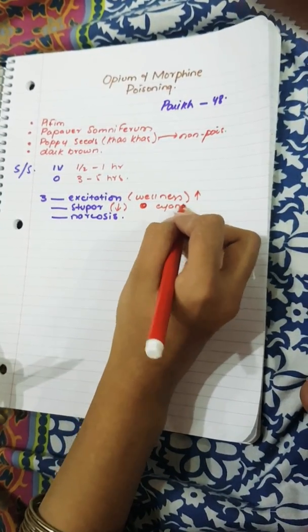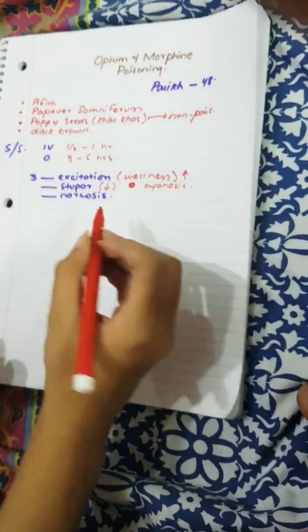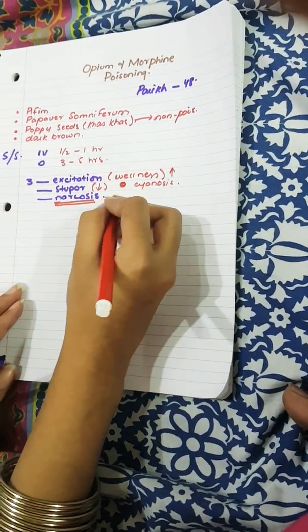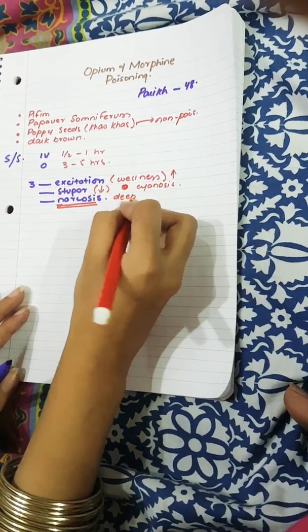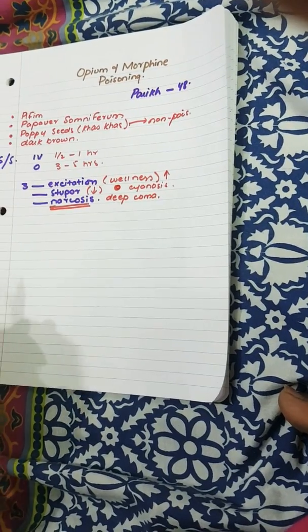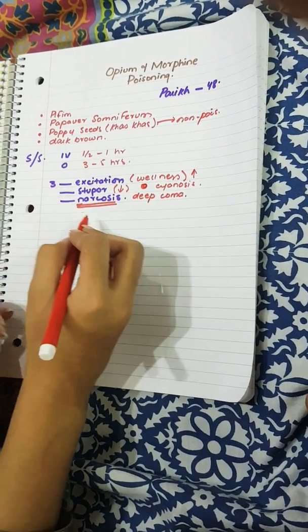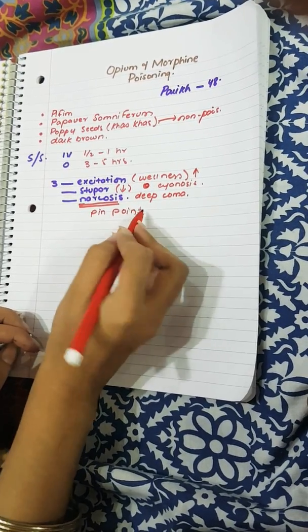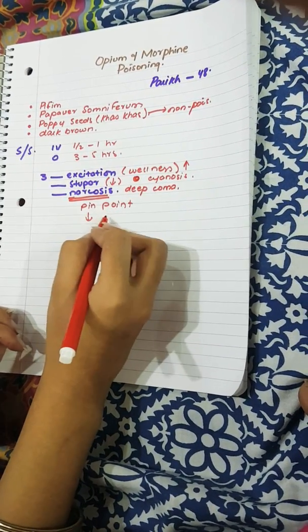Then comes the stage of narcosis. Narcosis here means that the patient is in deep coma. So in this deep coma, the pupils will be pinpoint, the pulse will be feeble and rapid.